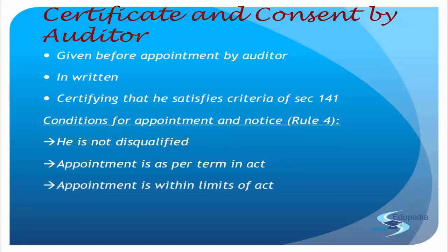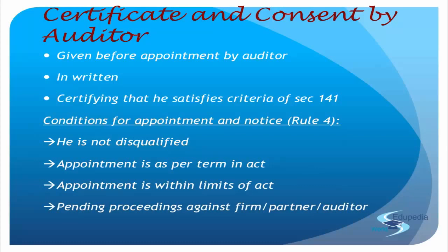Second condition: you all know there is a limit to the number of audits that an auditor can undertake. So that limit has to be seen — meaning this proposed appointment should be within the limits laid down under the authority of the act. After this, the last condition is the pending proceedings against the firm, partner, or auditor. You'll have to prepare the list of all proceedings which are against the auditor or the audit firm, or in the case of a firm, even against a single partner.